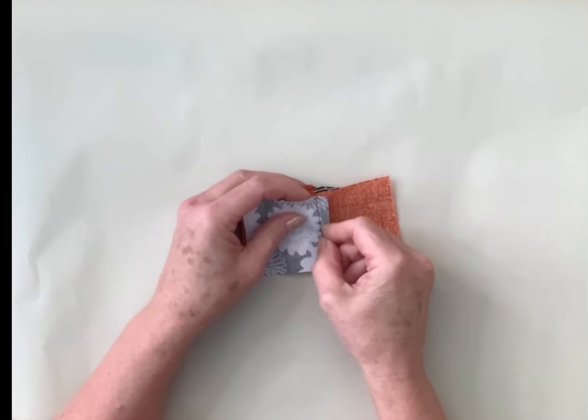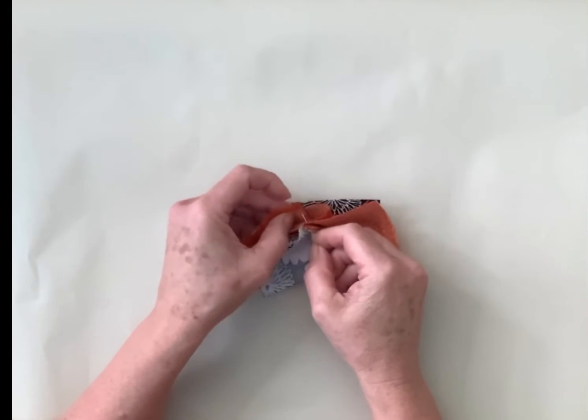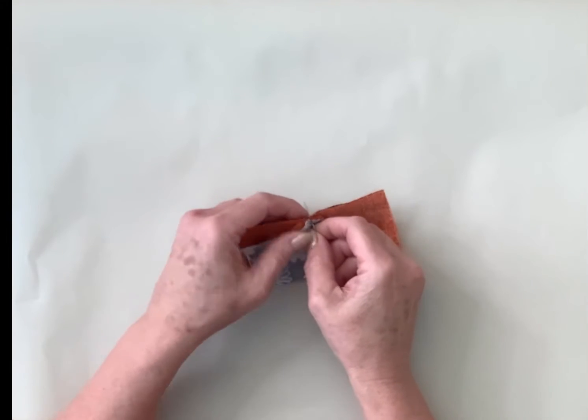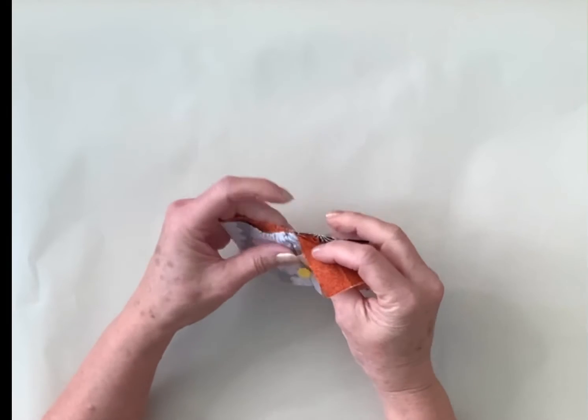You've then got to pop a pin a quarter of an inch down the side through the bow tie itself and through the other piece and then along that seam to hold those seams together.